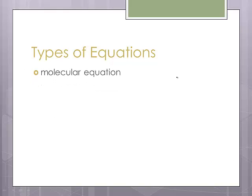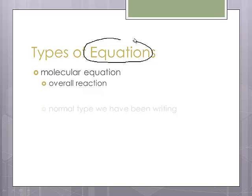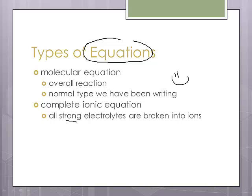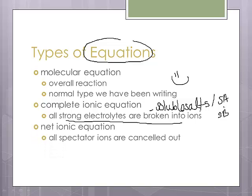Now, there are three types of equations. This should say equations on your slide. I'm pretty sure I crossed it off. First one is the molecular. This is the overall reaction. It's the normal type we've been writing. So this is what we've been doing all along. Now, complete ionic is all strong electrolytes are broken into ions. So all strong electrolytes are going to be our soluble salts. Now, net ionic equation, we cancel out what are called the spectators. Spectators are things that are exactly the same on both sides. They don't participate, and it only includes the species that participate in the chemical reaction.